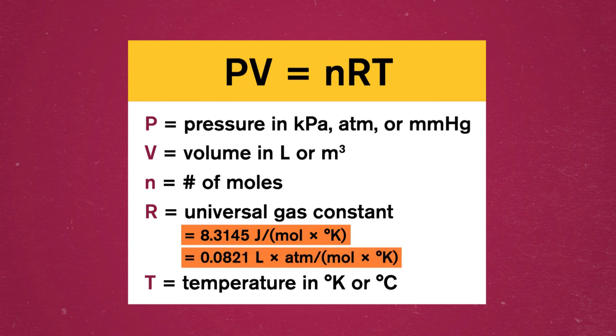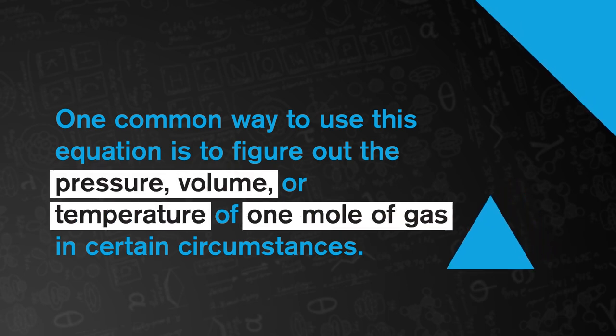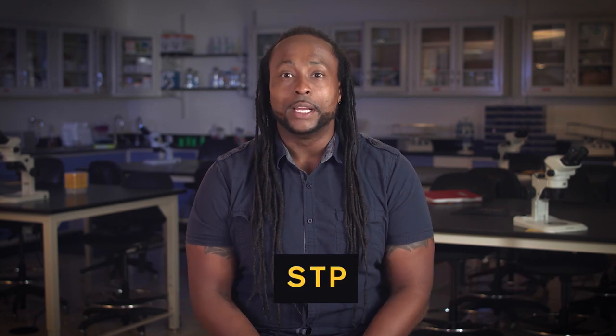The universal gas constant is equal to 8.3145 joules per mole kelvin, or 0.0821 liter atmospheres per mole kelvin. There are a lot of units in the universal gas constant, but most will cancel out during ideal gas law calculations. One common way to use this equation is to figure out the pressure, volume, or temperature of one mole of gas in certain circumstances, so that we can use our dimensional analysis and mole problem-solving skills. If we presume the gas is at standard temperature and pressure, or STP, we get two bonus given numbers to plug into our equation.